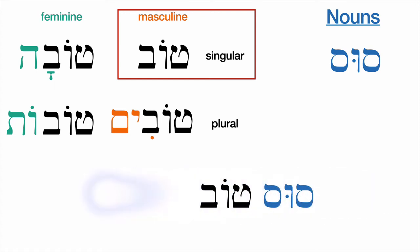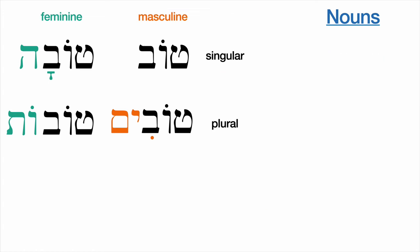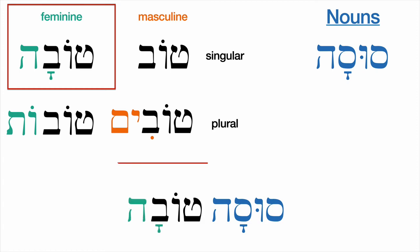So here's sus and here's tov — sus tov means a good horse. Now, susah: if sus is a male horse, susah is a mare, a female horse. In this case we cannot say susah tov; since susah is a feminine noun, we need to use the feminine adjective. Happily, they even sound alike and look alike — susah, tovah.